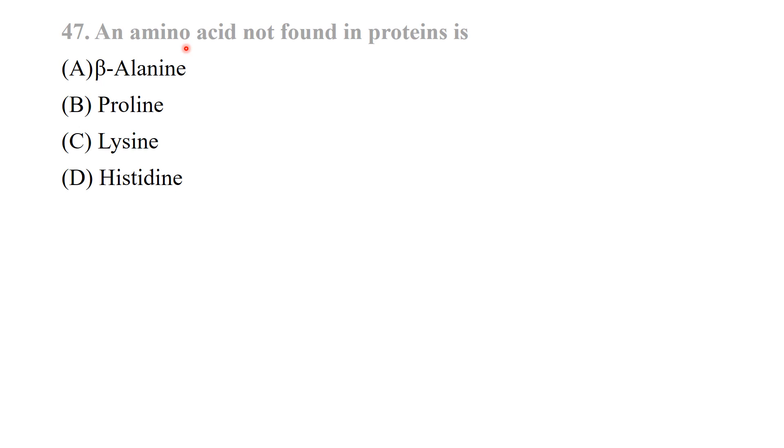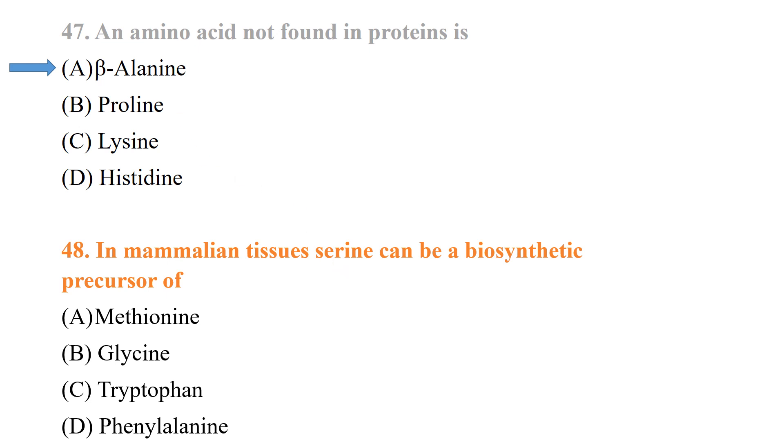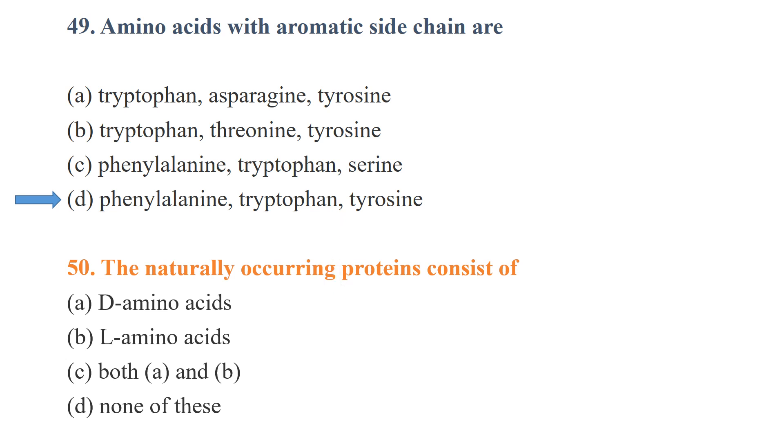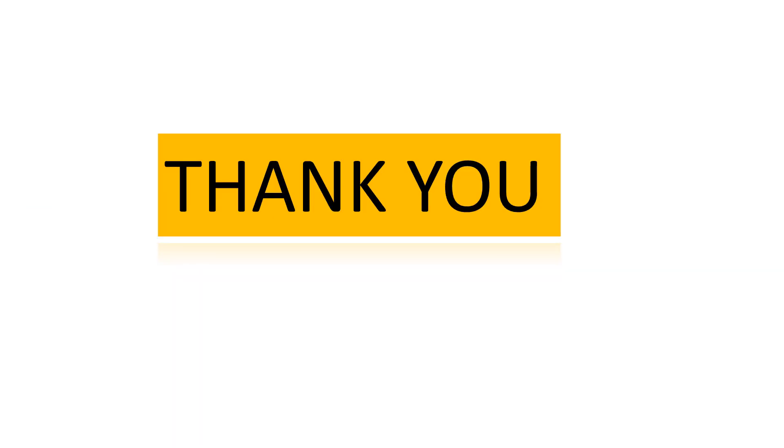An amino acid not found in protein is beta-alanine. In mammalian tissue, serine can be a biosynthetic precursor of glycine. Amino acids with aromatic side chains are phenylalanine, tryptophan, and tyrosine. These are aromatic amino acids.